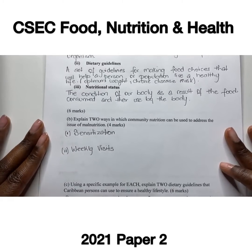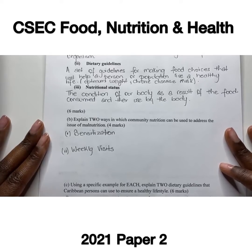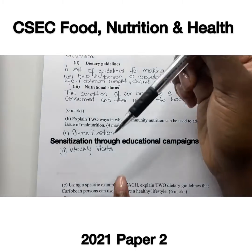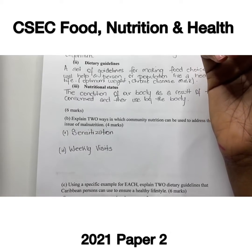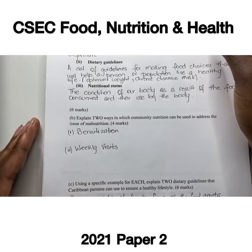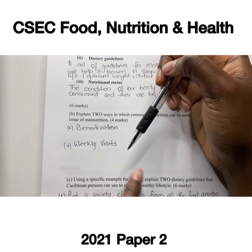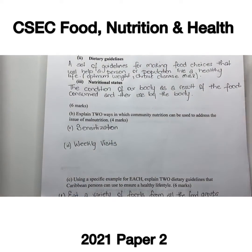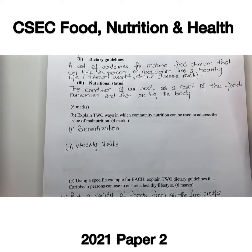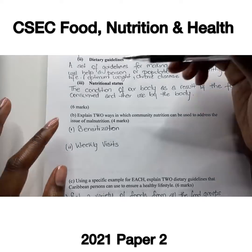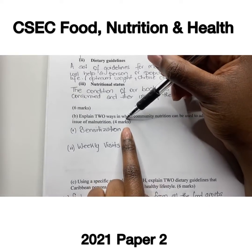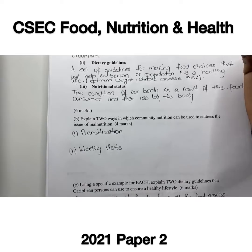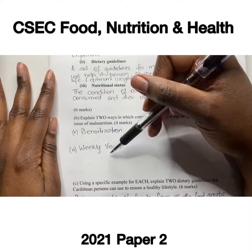The second question asks to explain two ways in which community nutrition can be used to address malnutrition. We could sensitize community members through educational or health promotion, promoting the different food groups and nutrients and the correct daily amounts. Along with that, weekly visits of community health professionals to homes in the community would reach the population more effectively. Sensitization and weekly visits — expounding on these two could secure four marks.